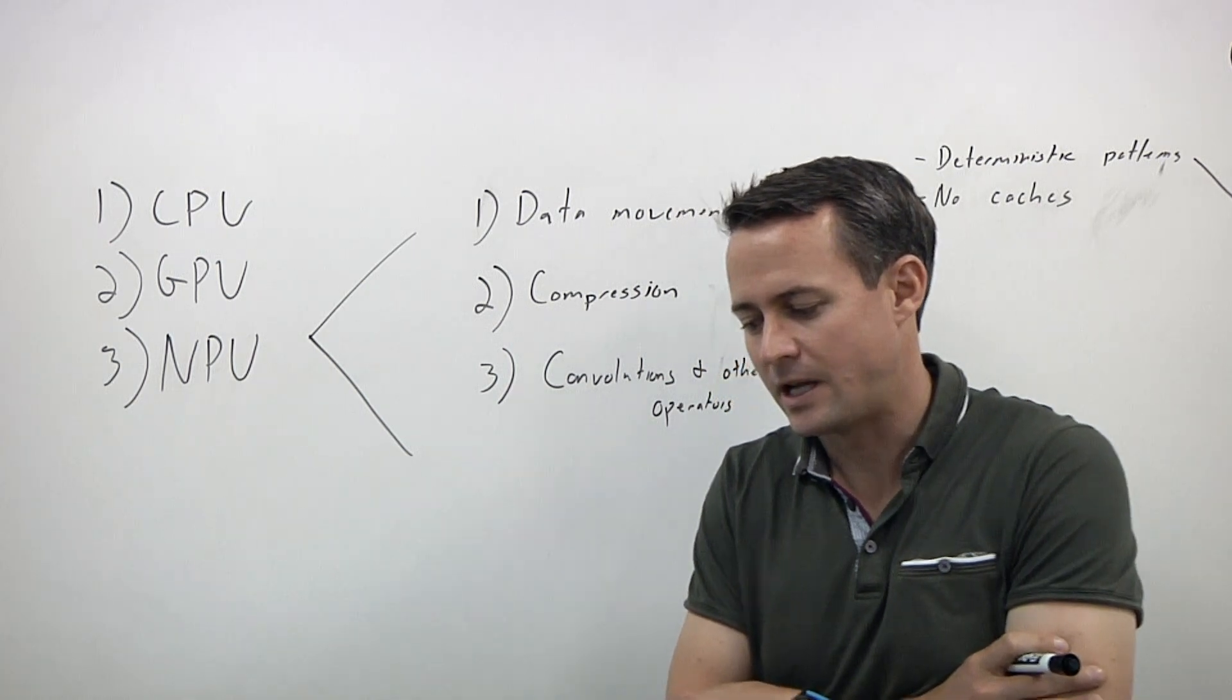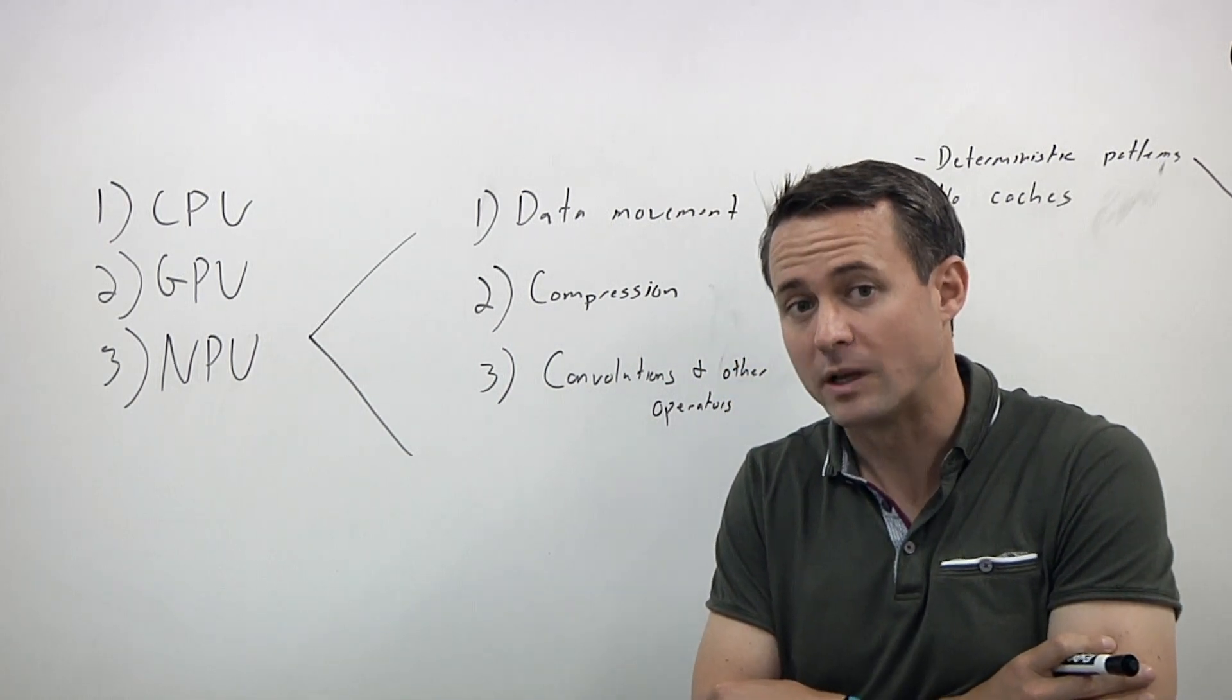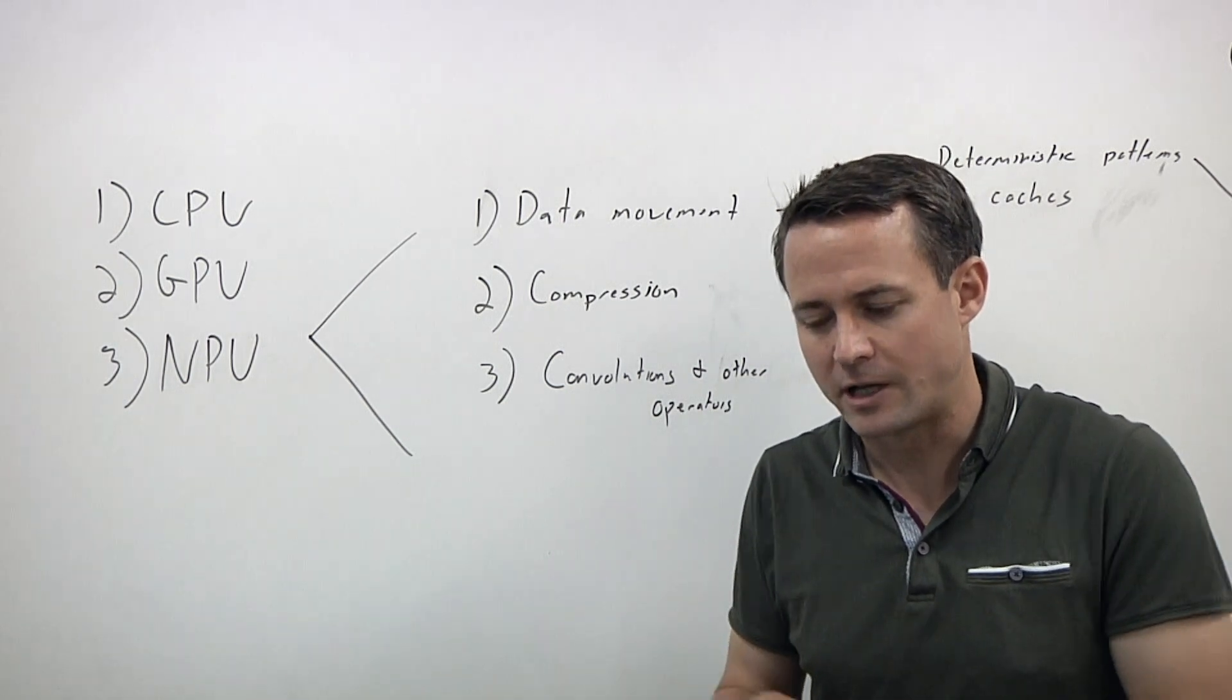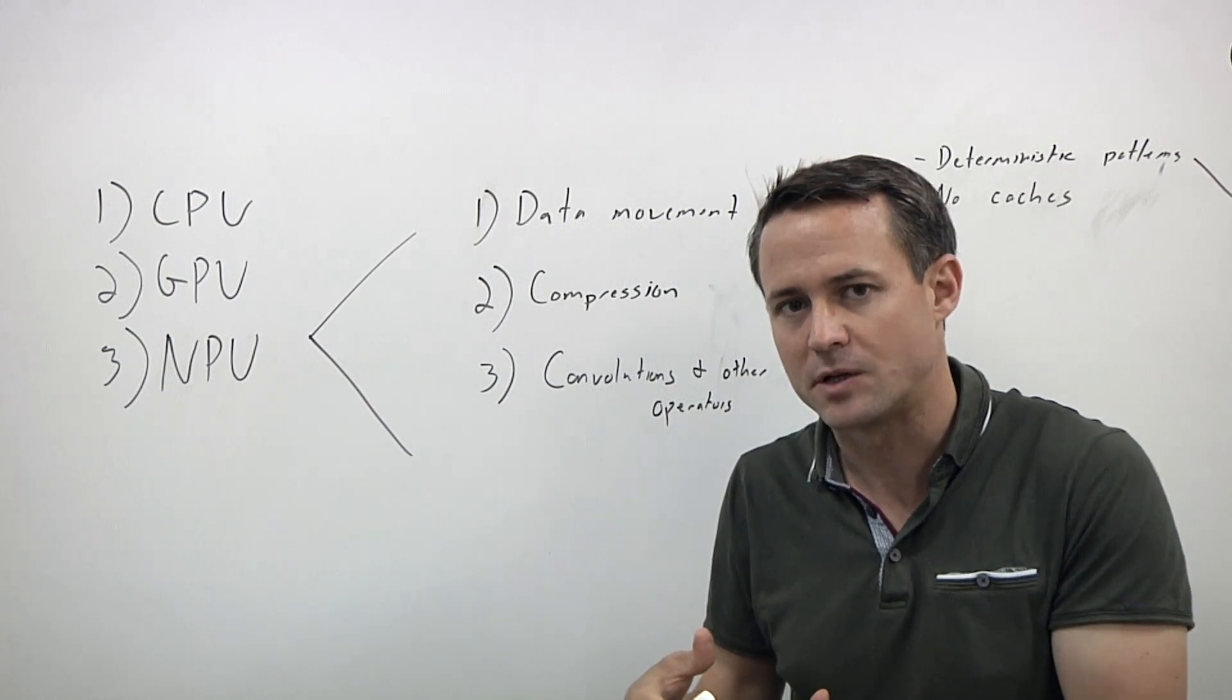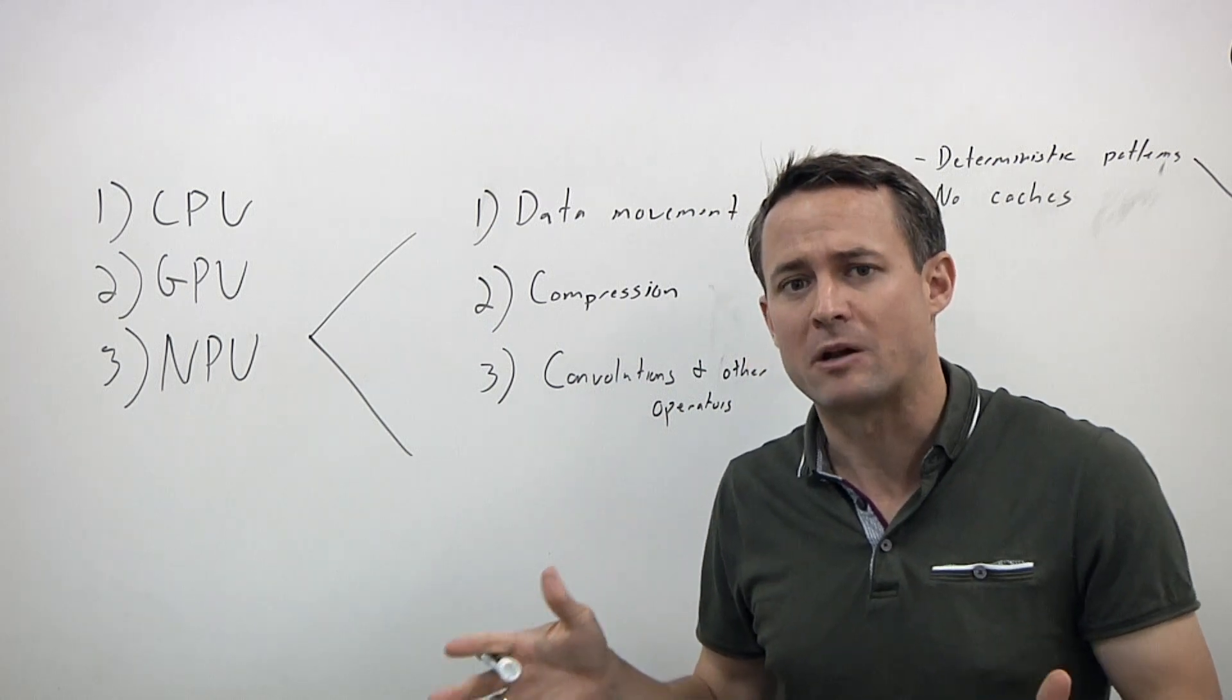That's true. Machine learning inference, in general, has the nice property of being relatively embarrassingly parallel. Once you've split everything up and can work on it, there is a little bit at the end that requires some synchronization, but it's relatively small compared to that massive amount of parallel work.